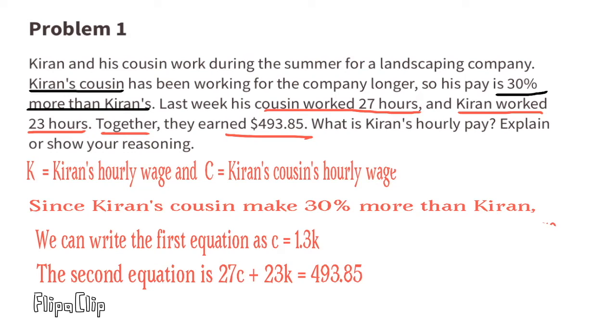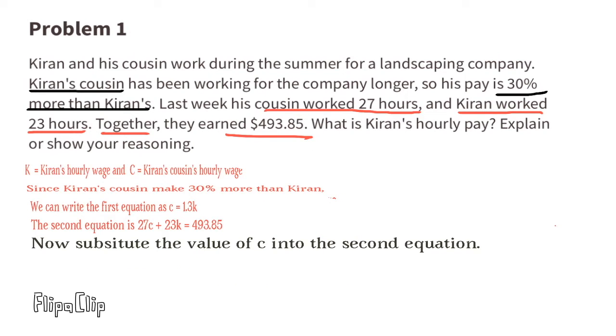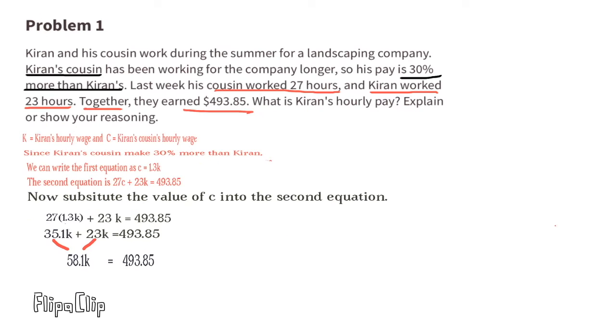27C stands for 27 hours that Kiran's cousin worked, and 23K represents the 23 hours that Kiran worked. The 493.85 represents the $493.85 that they earned together. Now substitute the value of C into the second equation. We determined that C equaled 1.3K, so we can substitute the C with a 1.3K. 27 times 1.3K equals 35.1K. Next, we combine like terms. 35.1K plus 23K equals 58.1K. Divide both sides by 58.1, and Kiran makes $8.50 an hour.